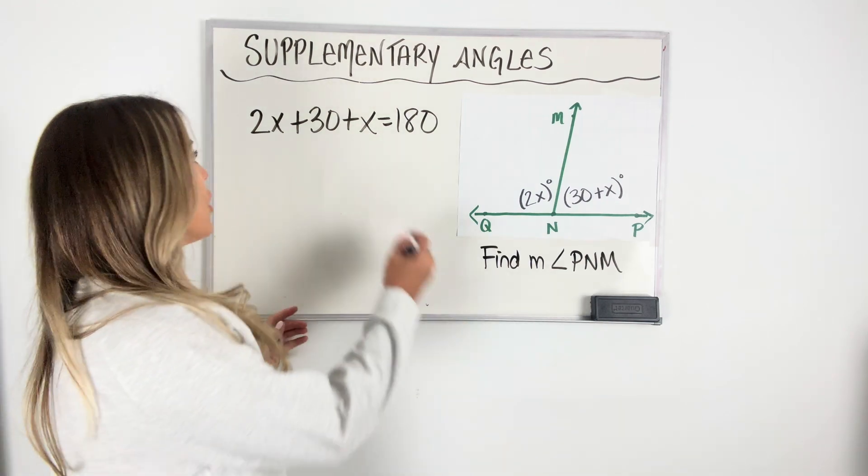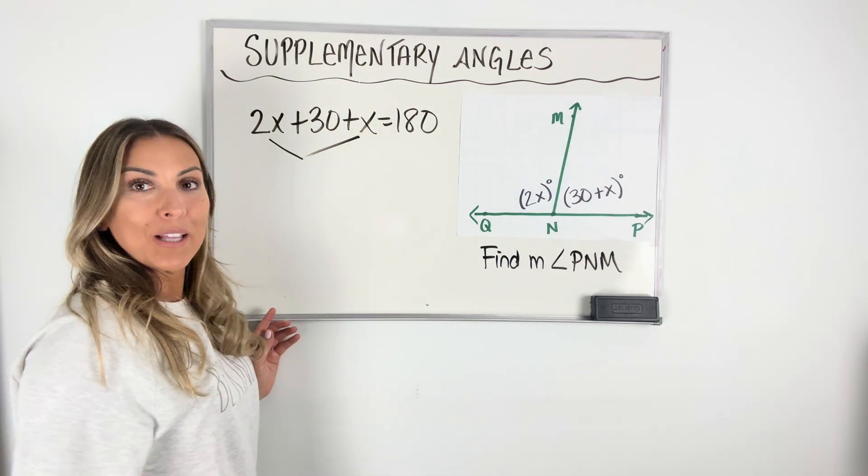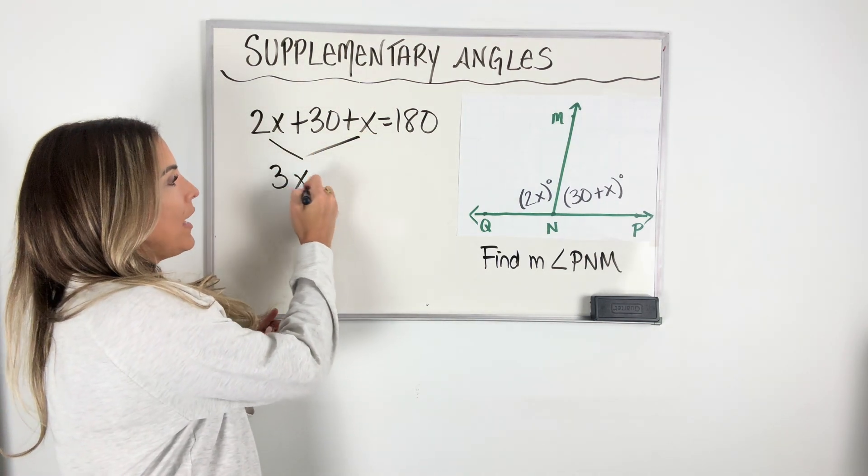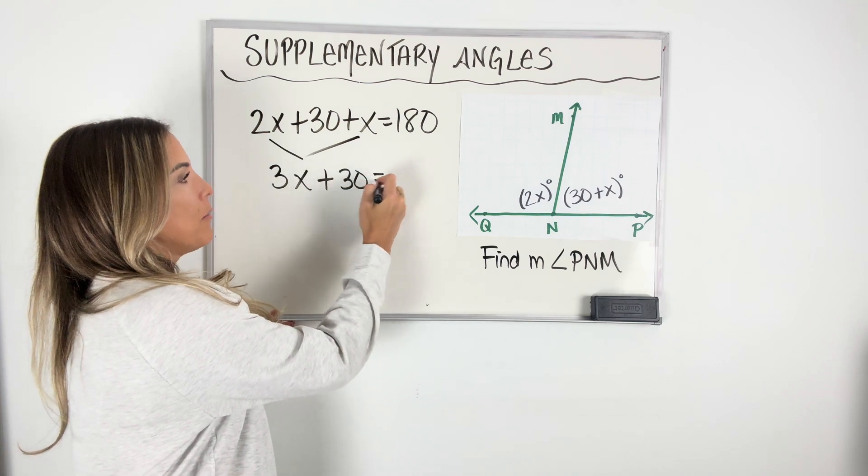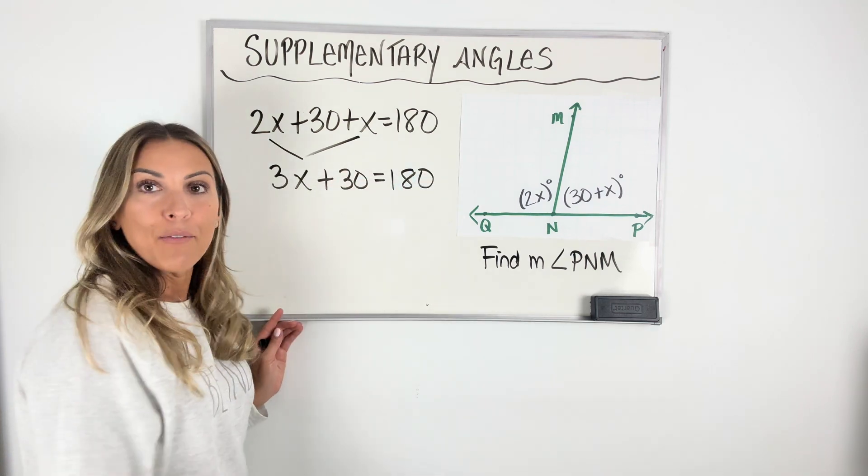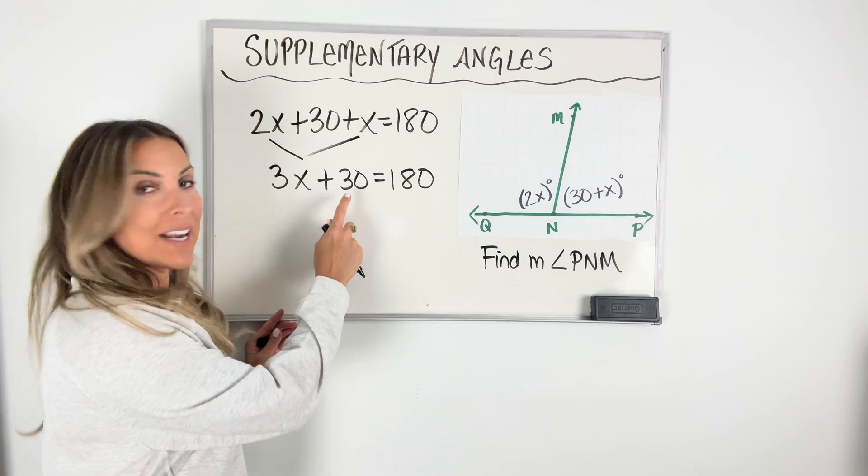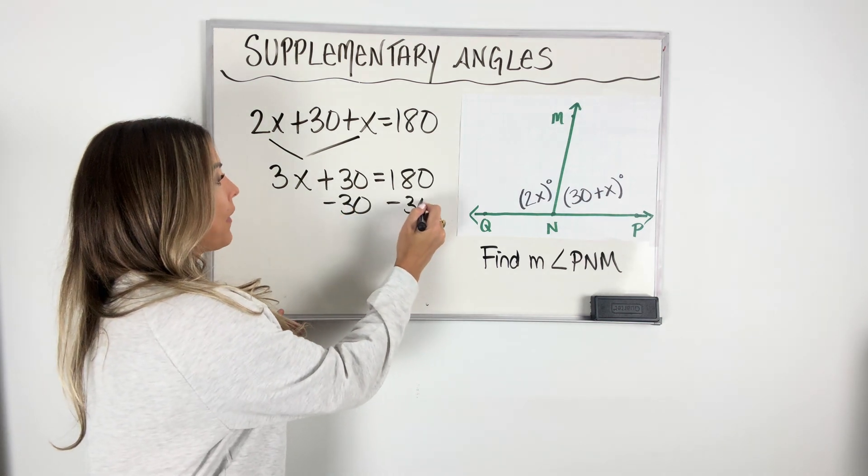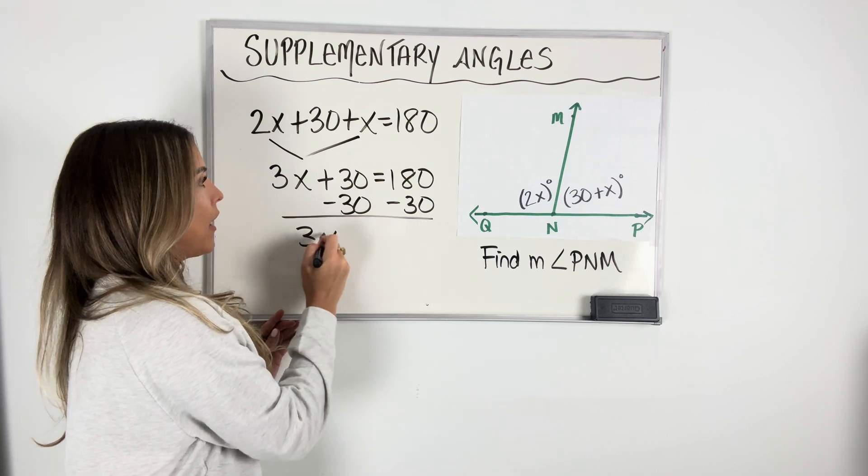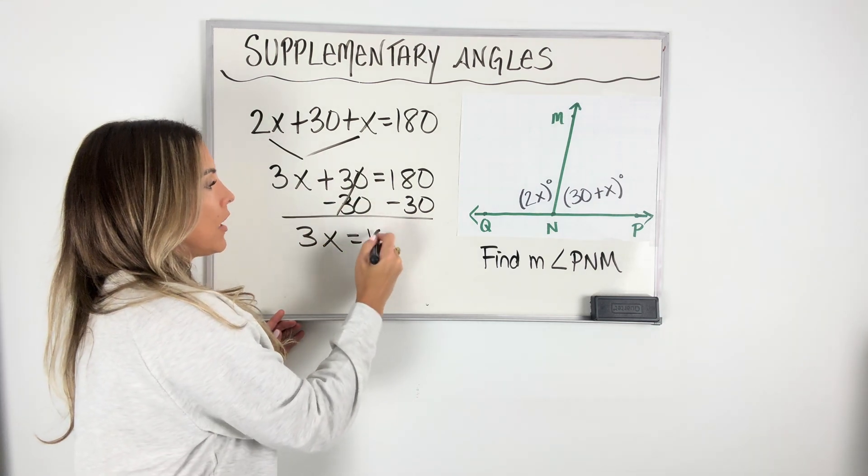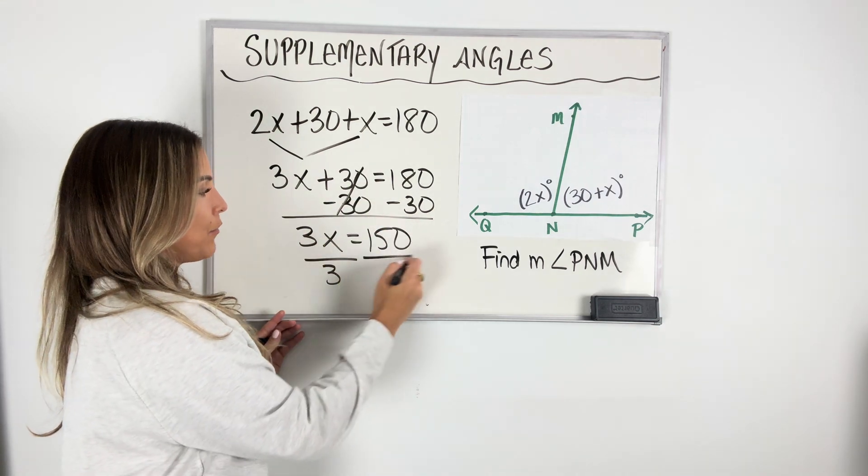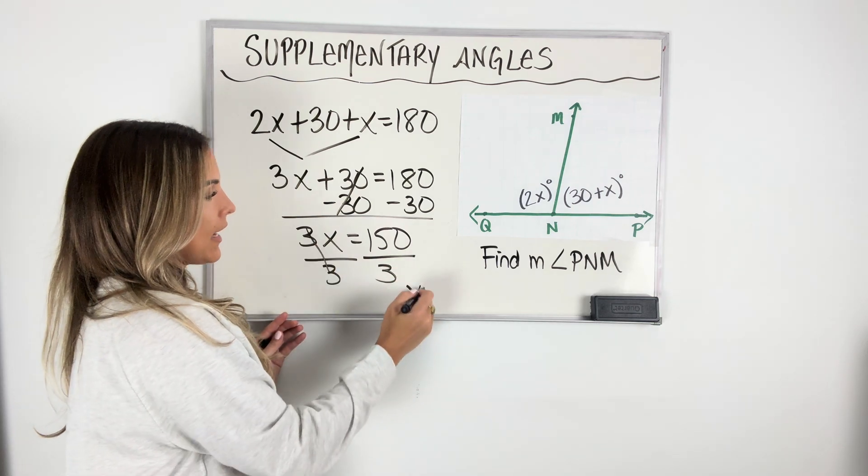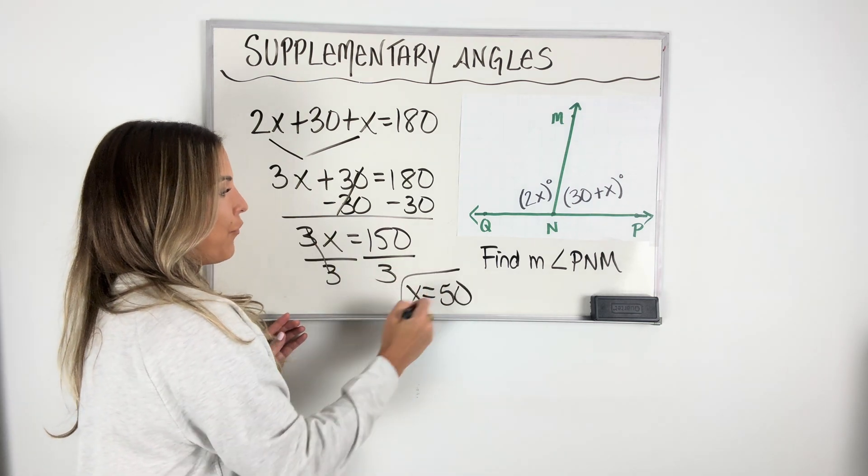And now we just have to solve the equation. So I'm looking for those like terms. 2X plus X is 3X. I'm going to bring down that plus 30, bring down my equal sign of my 180. I have a two-step equation in front of me. I'm going to go ahead and subtract 30 from both sides to help me get that X closer to being by itself. So I have 3X equals 150. Now I'm going to divide by 3 on both sides to get X is equal to 50.